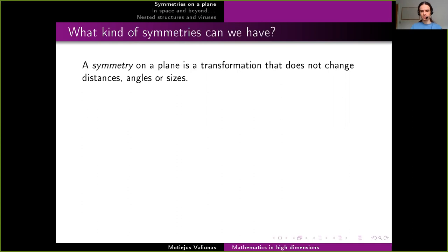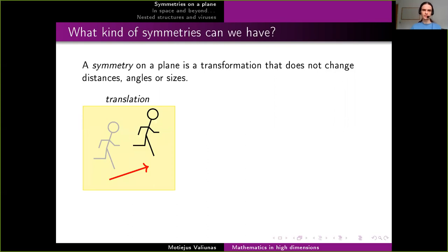What kind of symmetries can we have? There are three main types. Translation is the first one — this is just moving things around without changing the orientation, without changing the way the thing is presented. So if you have something with a top and bottom, the top and bottom don't change — we just move it.